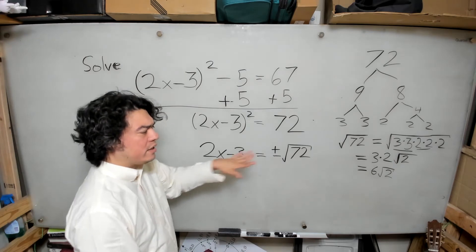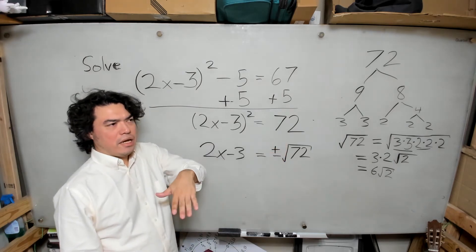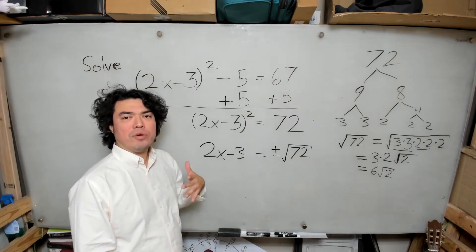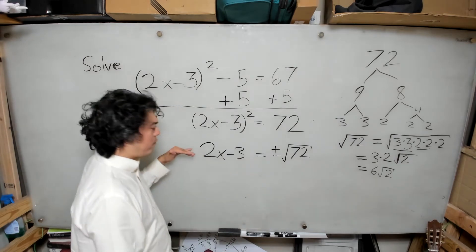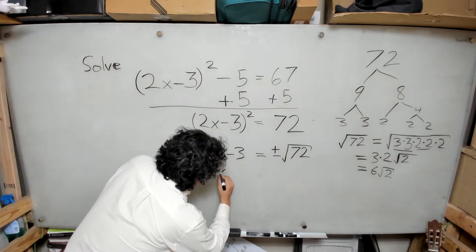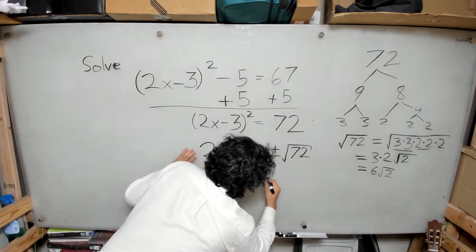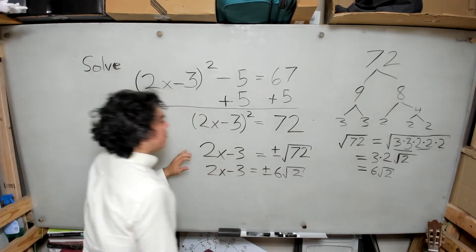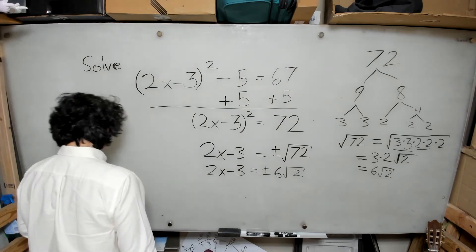This is not a decimal approximation of the square root — it's an algebraic simplification. So I can now replace the previous line with: 2x minus 3 equals plus or minus 6 square root of 2.